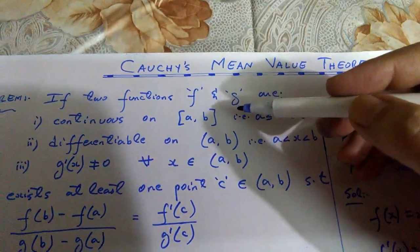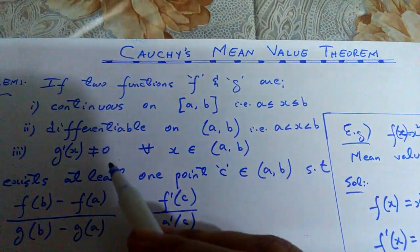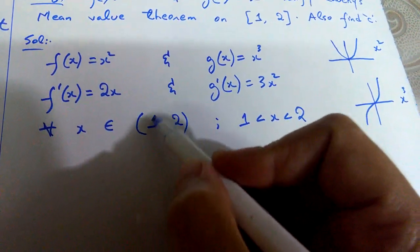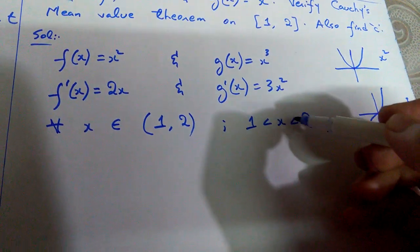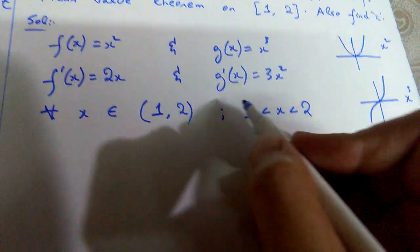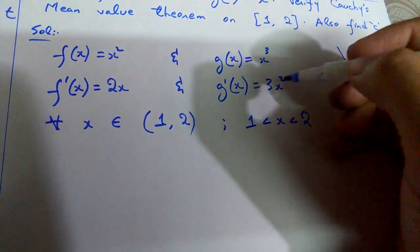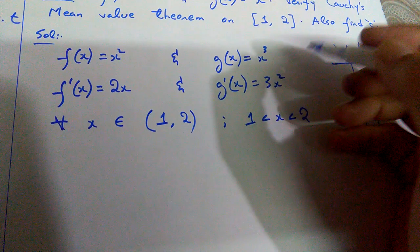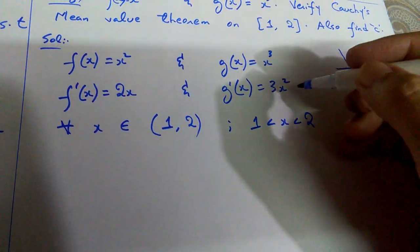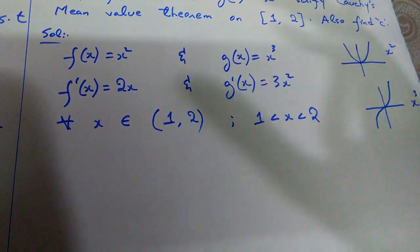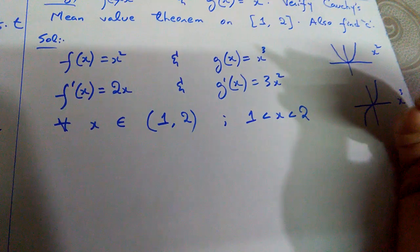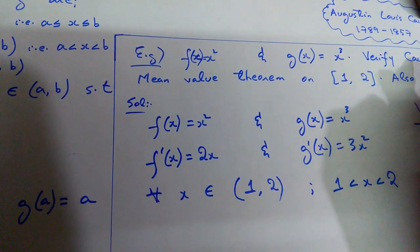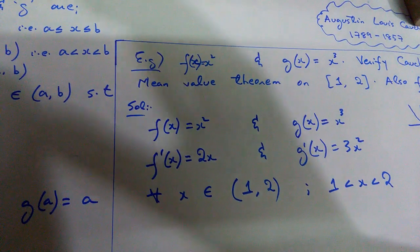The first two conditions are satisfied. For the third condition: whatever value x you pick from the open interval (1, 2), you are not having any zero value here — zero lies outside this interval. All numbers in this range are non-zero and will give positive answers since we have a square. So g'(x) ≠ 0 throughout — the third condition is also satisfied.